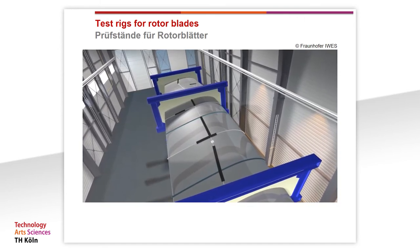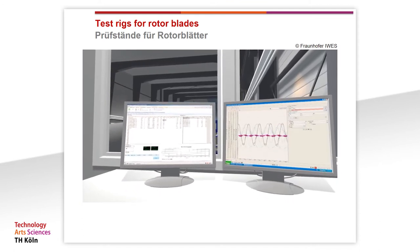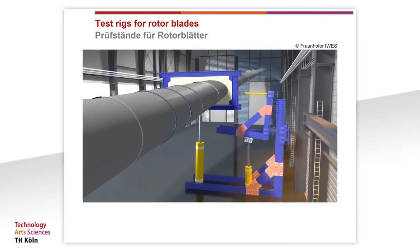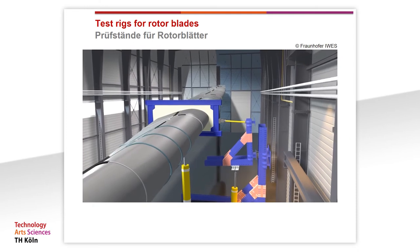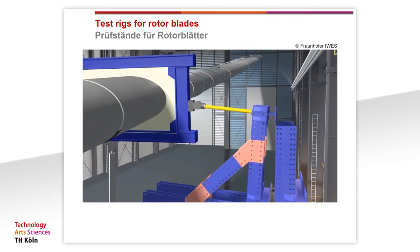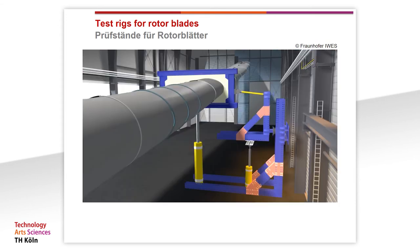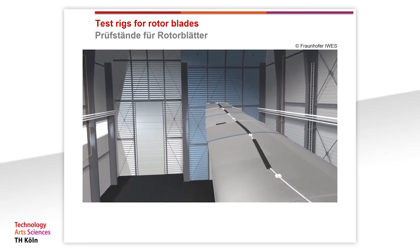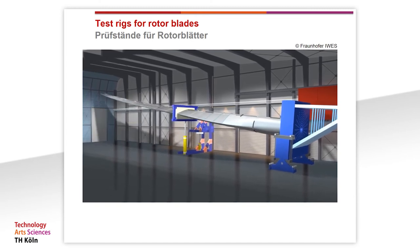Hunderte am Blatt angebrachte Sensoren registrieren die auftretenden Verformungen, Kräfte, Dehnungen, Beschleunigungen und Temperaturen. Ein Messsystem zeichnet alle Werte auf, sodass Schwachstellen im Design sichtbar werden und optimiert werden können. Bei den zyklischen Ermüdungstests wird das Rotorblatt nacheinander in Schwenk- und Schlagrichtung getestet. Ein servohydraulischer Zylinder hält das Blatt mit geringem Kraftaufwand in der Eigenfrequenzschwingung, sodass kostengünstige Langzeittests möglich sind. Beim biaxialen Ermüdungstest wird das Blatt gleichzeitig in zwei Richtungen angeregt.